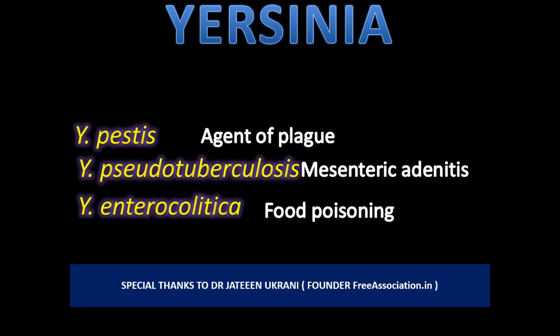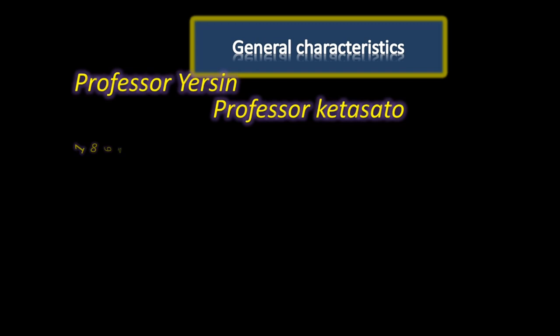Yersinia pestis is the agent of plague. Yersinia pseudotuberculosis causes mesenteric adenitis, and Yersinia enterocolitica causes food poisoning. They were discovered by Professor Yersin and Kitasato in the year 1894, both independently.